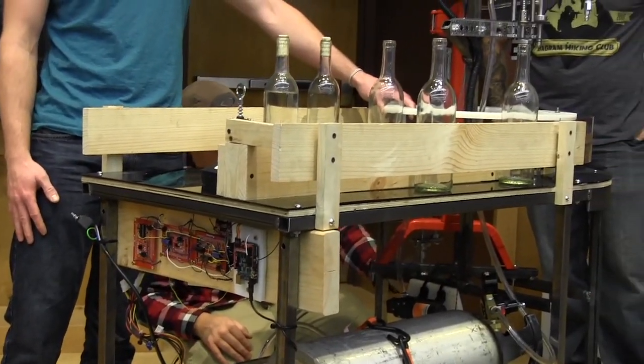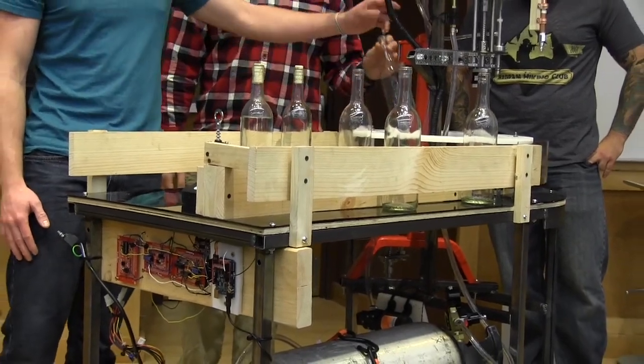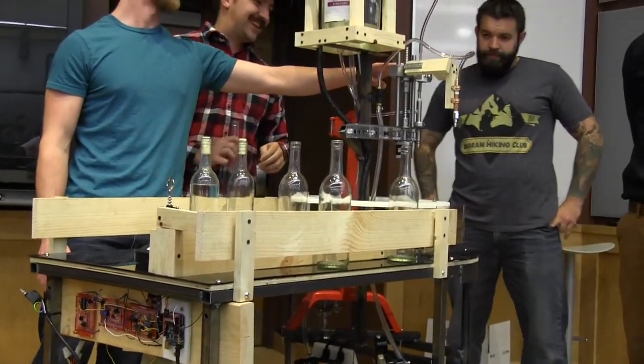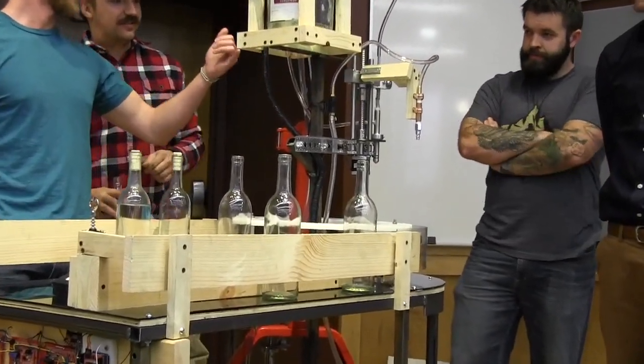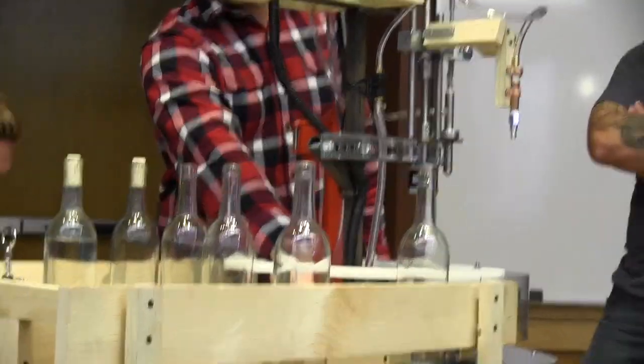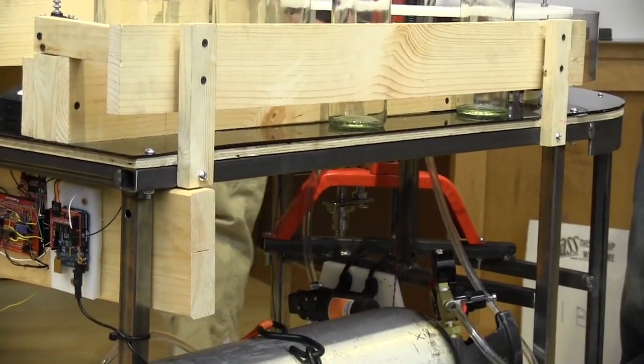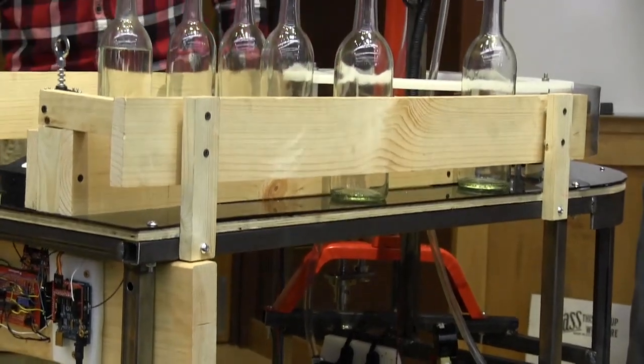One to drive the rotunda or the carousel. And then the other one moves the fill and the purge up and down. And then the last one is over here to raise the piston that raises up the wine bottle.